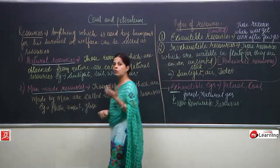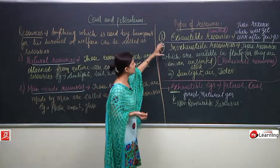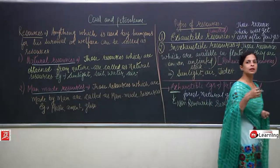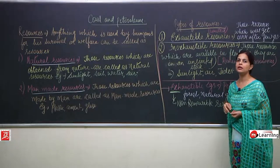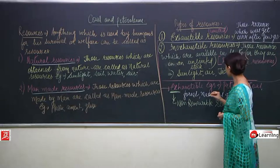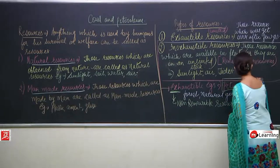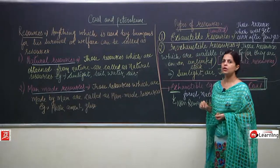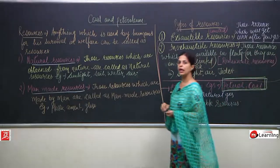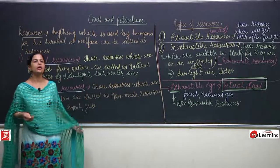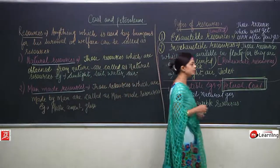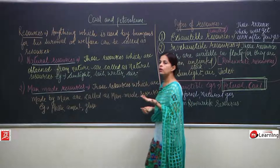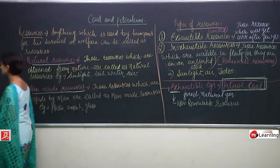Now we will talk about exhaustible resources specifically. When I say petrol and coal, these are exhaustible resources. As the chapter name suggests — Coal and Petroleum — today we are going to talk about petrol and coal: how we get petrol, how coal is formed, the types of coal, petroleum products, their uses, and how these things are in danger.